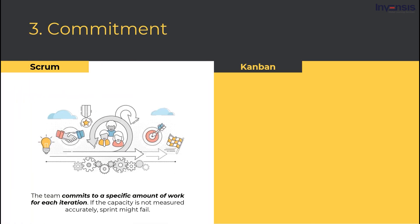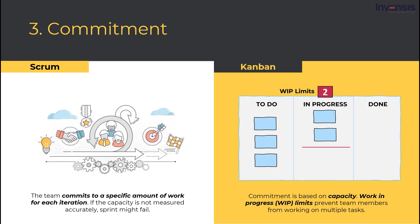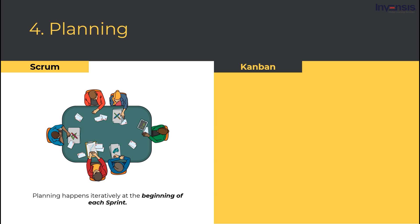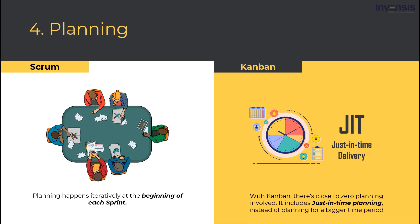Commitment. In the Scrum framework, the team commits to a specific amount of work for each iteration. Commitments are made based on previous sprints, so if the team does not anticipate its capacity accurately or unexpected problems arise, the sprint fails. In Kanban, the commitment is based on capacity. Work-in-progress limits prevent team members from working on multiple tasks. Everybody commits to finishing what they have started before engaging in new work and only takes up new work items within their WIP limit. Planning. With Scrum, planning happens iteratively at the beginning of each sprint, setting clear targets and bringing everybody on the same page. With Kanban, there is close to zero upfront planning — it uses just-in-time planning based on past workload data including work types, size, classes of service, and various other factors.